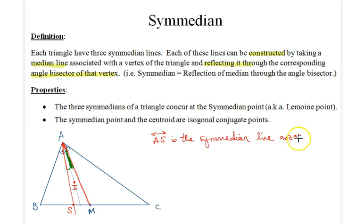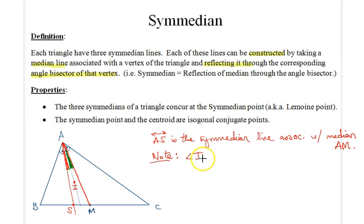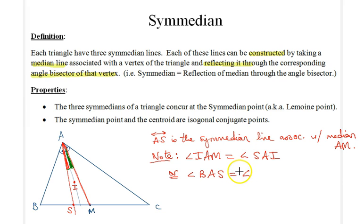Let's say the point where the symmedian meets BC is S, so AS is the symmedian line associated with median AM. As noted, we have these two angles equivalent: angle IAM equals angle SAI, or equivalently angle DAS equals angle CAM. This is because AI is the angle bisector — it bisects angle A. You can similarly construct symmedian lines for the other vertices.